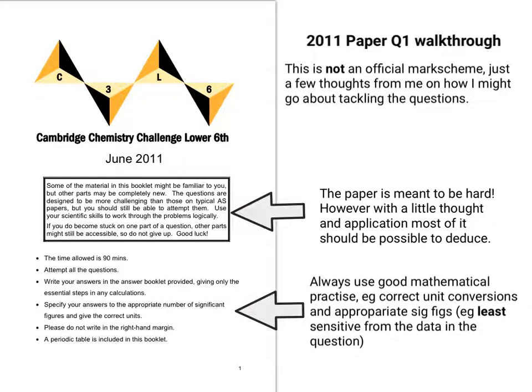So when they talk about an appropriate number of significant figures and giving the correct units, you need to give the correct unit conversions and when they talk about appropriate significant figures, they mean the least sensitive from the data in the question. So let's say the least sensitive number of significant figures is three. Your answer should be three significant figures. Okay, so let's crack on with the question.